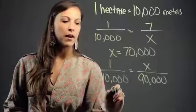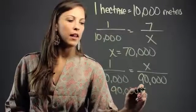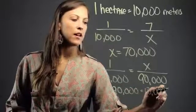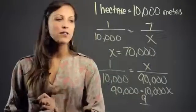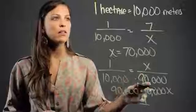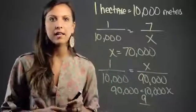We get 90,000 equals 10,000 times x. And when we divide on both sides we're going to get x equals 9. So we find out that 90,000 meters are equivalent to 9 hectares.